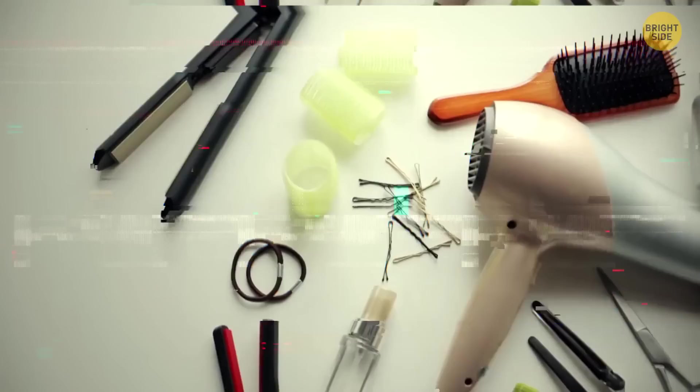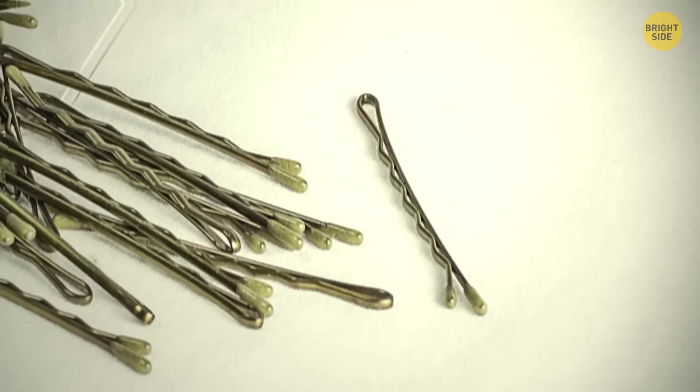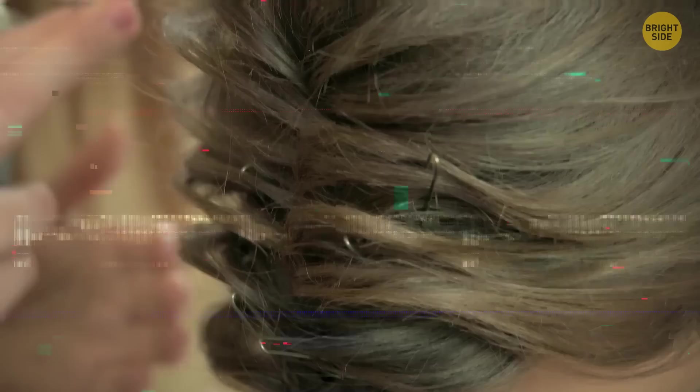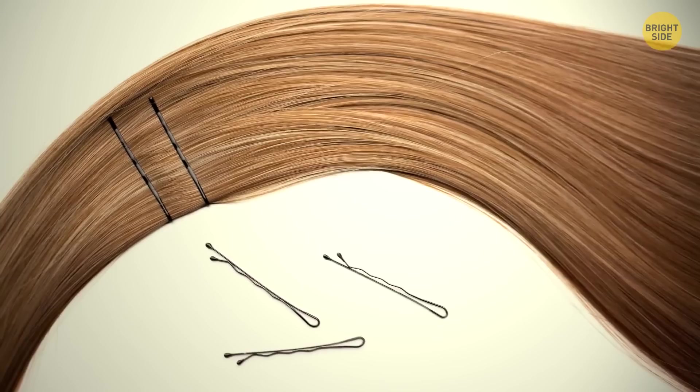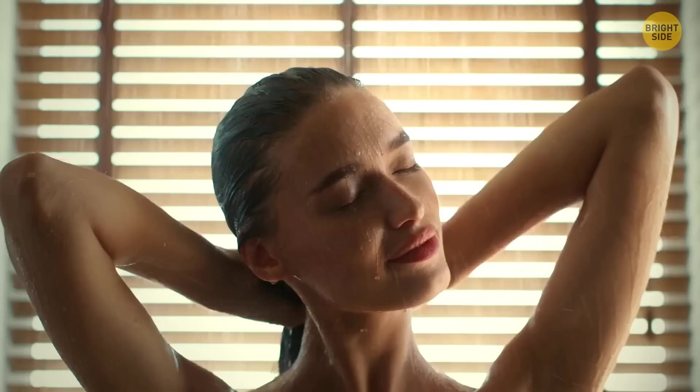Bobby pins have grooves on one side to hold your hair in place better. Crazy notion, huh? The straight side goes face up while the grooves go down against your head. They're called bobby pins because of the bobbed hairstyle which was popular in the 1920s, though the pins were invented in the 19th century. The look is gone, but the pins remain. Please take them out before you wash your hair as they don't look great stuck to your fingers.